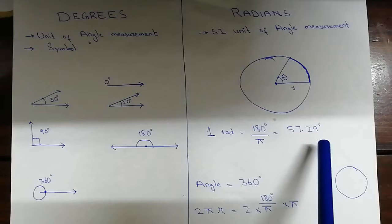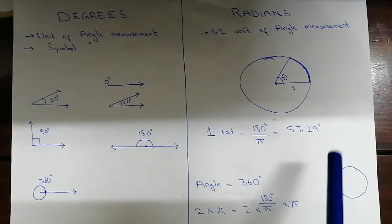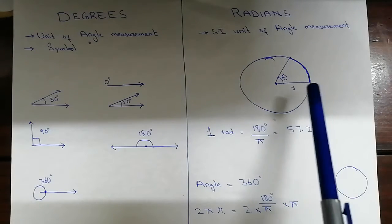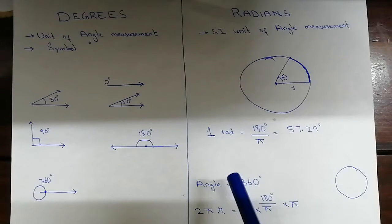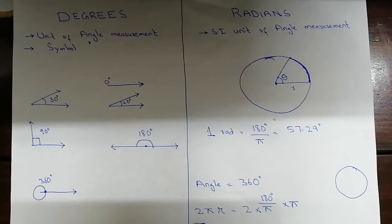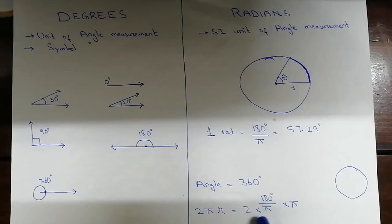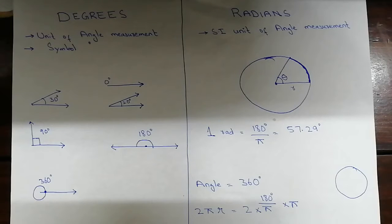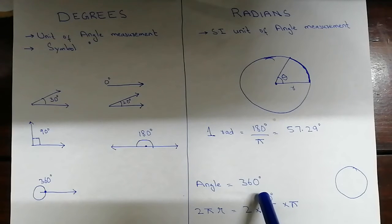The whole circle is represented as 2π radians. This means 2 multiplied by pi multiplied by one radian, where one radian equals 180° divided by pi. Multiplying these together: 2 × π × (180°/π) = 360°. So in radians the full circle is 2π radians, and in degrees it is 360 degrees.